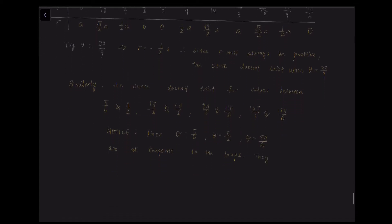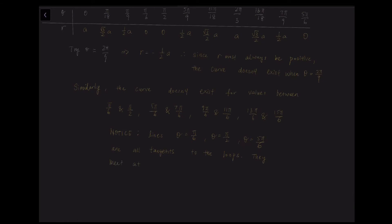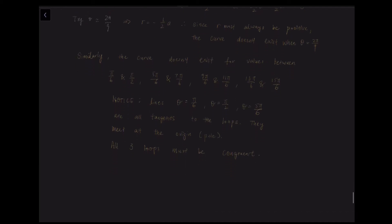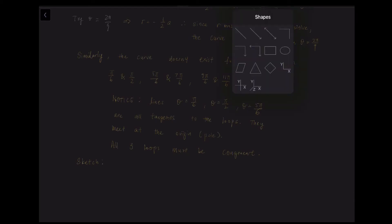Plotting the values from the table and joining the points together gives a curve with 3 loops. You also have to notice that the lines theta equals π over 6, theta equals π over 2, and theta equals 5π over 6, where r equals 0, are the tangents to the loops. The tangents meet at the origin, and all 3 loops are congruent. Sketching the graph based on the table gives the 3 loops, which resembles the one I've drawn.